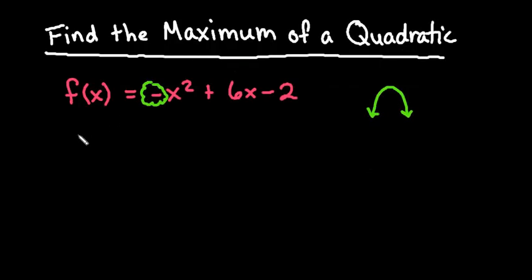So with this, what we would say is that there is a max, I'm ahead of myself, max at 7 when x equals 3.